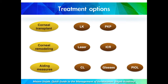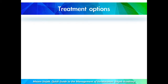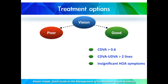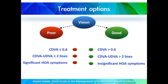In order to find the proper treatment path, we have to start from the vision of the patient. We can divide vision into good or poor. Good vision is defined as corrected distance visual acuity better than 0.6 decimal, the difference between corrected and uncorrected distance visual acuity is more than two lines, and there is insignificant high-order aberration symptoms.